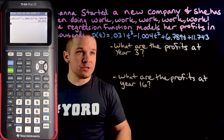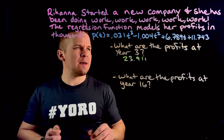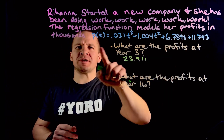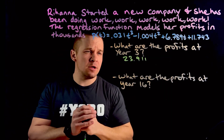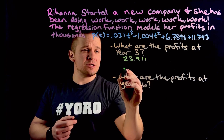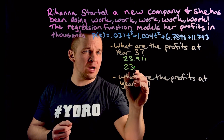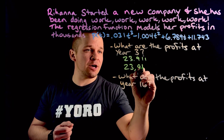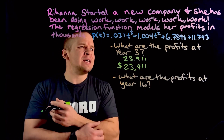So 23.911. What does that mean here? Well, it says the profits are in thousands of dollars, so that means I'm going to need to move this three decimal places. So really it's going to be $23,911. Beautiful. Wonderful.